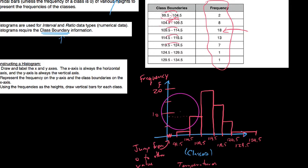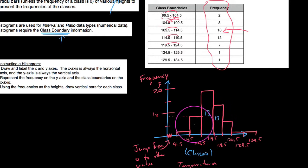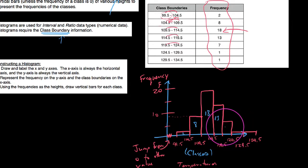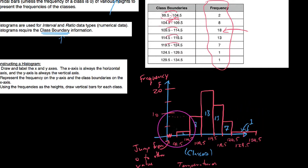Sometimes people will put numbers on top of the bars. So you'd write 18 on the tallest bar, 13 on the next, 8 to the left, then 2, and 7. If the bars are too small to label, you can draw arrows pointing to them and write 1.